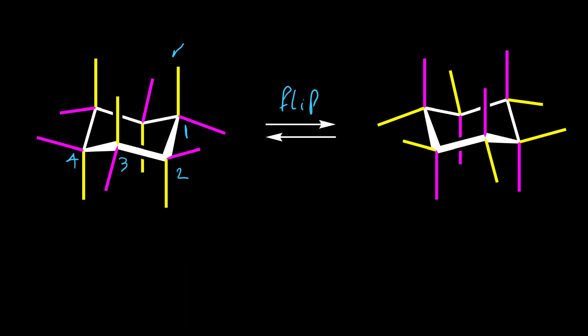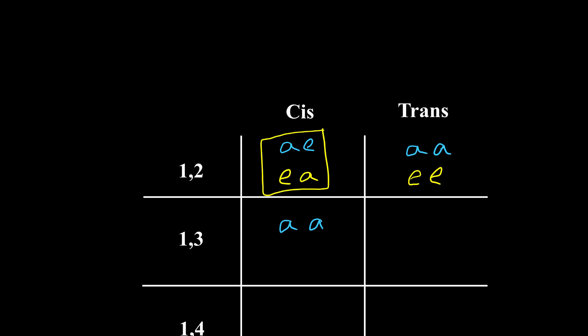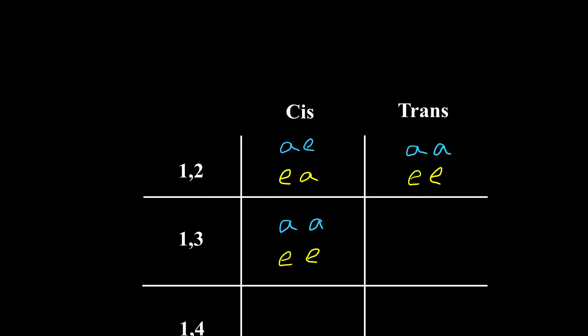For carbons one and three, if we have X on axial position, both of them are on the same side pointing up. So axial-axial for one and three is cis, and when we have ring flip both axials become equatorial. As we can see, the trans pattern for one and two is the same as the cis pattern for one and three, so we don't need further evaluation for the equatorial-equatorial case.